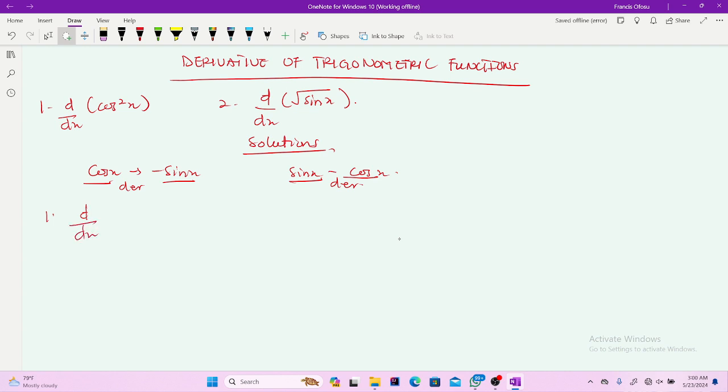So d/dx of cos²x - what are you getting? Now, you have cos²x. This becomes a composite function.